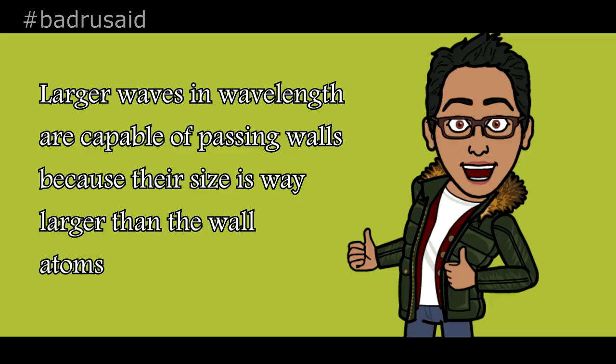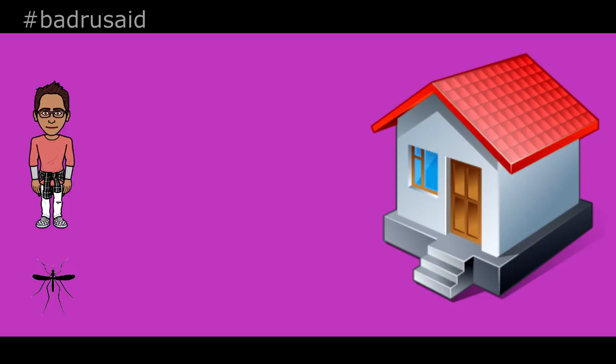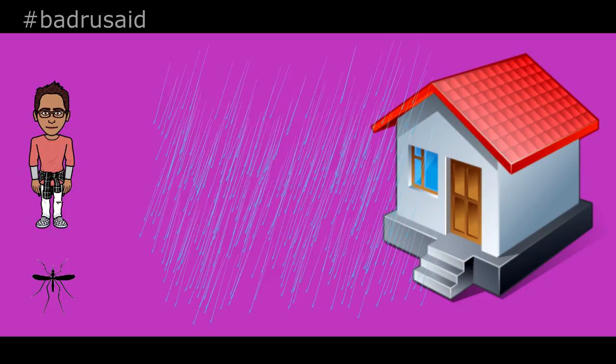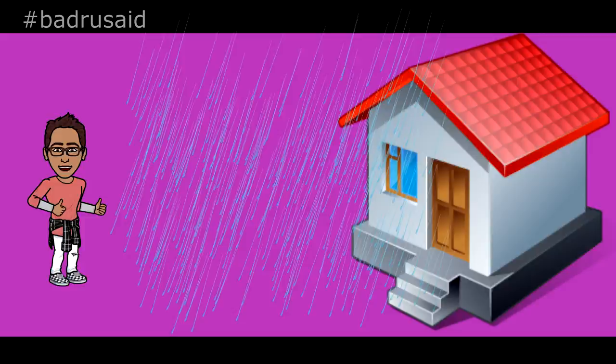Here is a great analogy. This is me, and this is a mosquito. I want to go to my house, and so does the mosquito, but it's raining outside. The rain is the barrier. I represent the large waves — I can easily run through the rain because my size is so large compared to the raindrops. But the mosquito will have a hard time because it is roughly the same size as one raindrop, so the raindrop will interact with it and knock it to the ground.